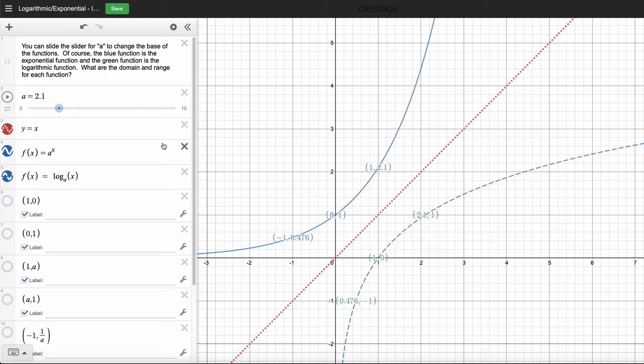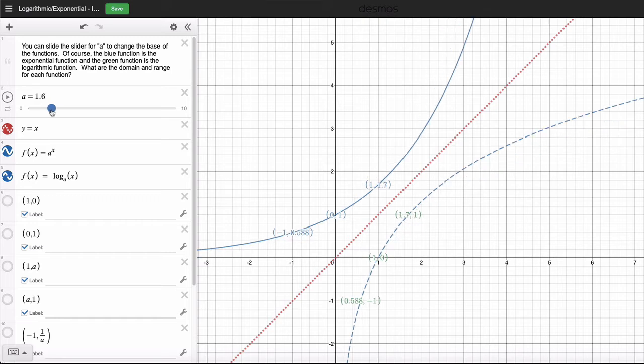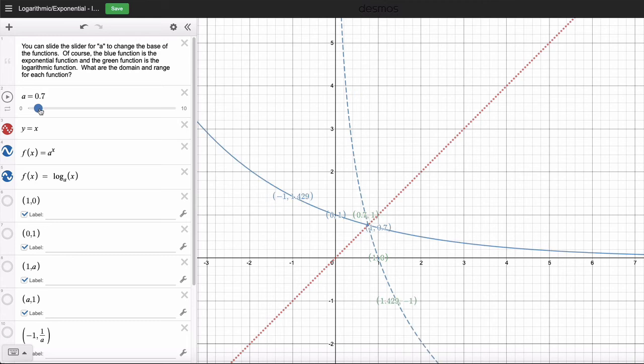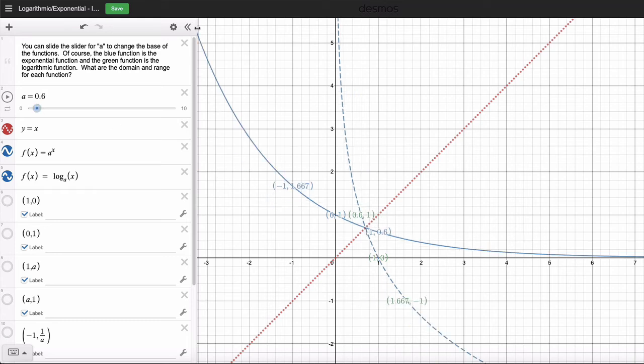If I change it to exponential decay, it'll still remain the inverse. So this is my original function, the exponential function. It reflects to be this one. At this point, they're on y equals x. Now, my original function looks like exponential decay, and this logarithm function looks like this.